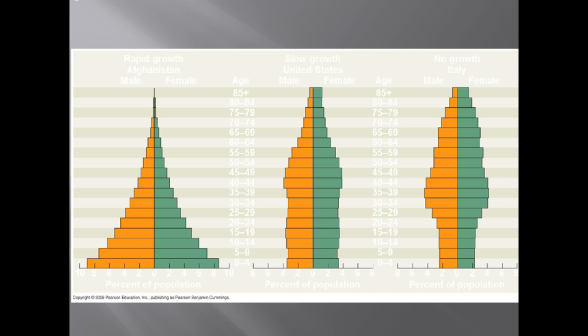One important demographic factor in present and future growth trends is a country's age structure — the relative number of individuals at each age. Write that down. To maintain population stability, a regional population can have zero population growth either as high birth rate minus high death rate, or low birth rate minus low death rate. Demographic transition is the move from the first state to the second. Age structure diagrams can predict a population's growth trend, illuminate social conditions, and help us plan for the future.